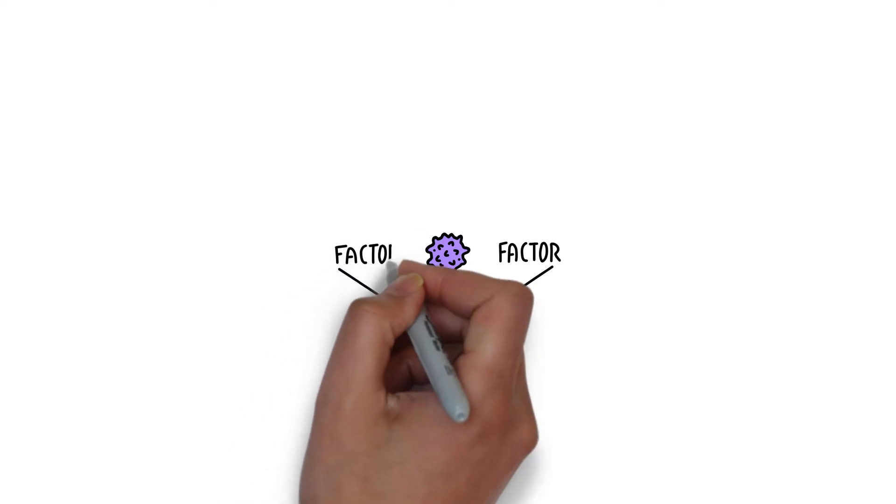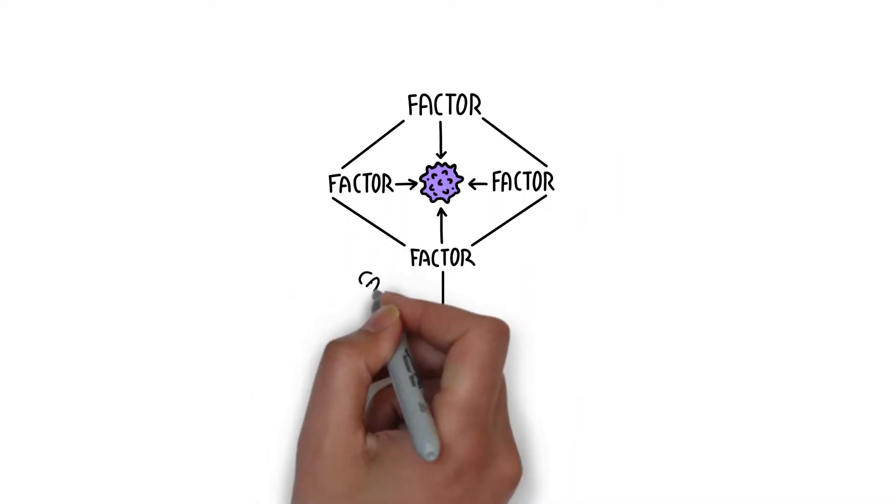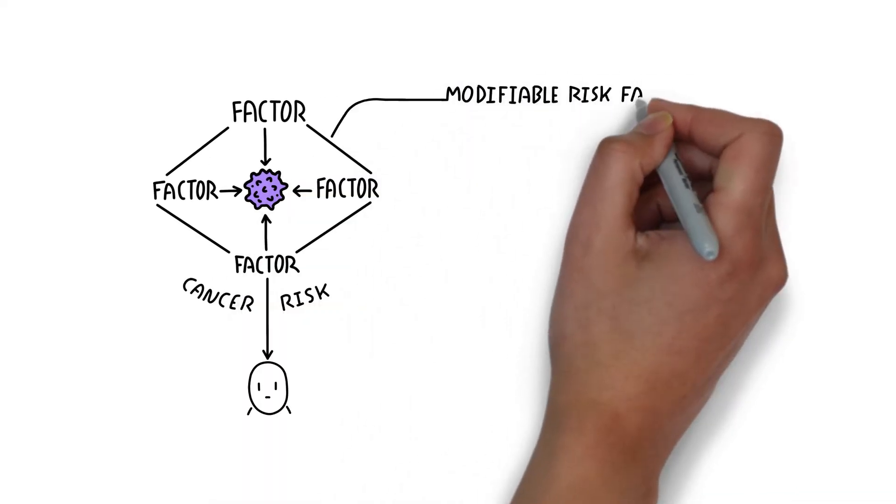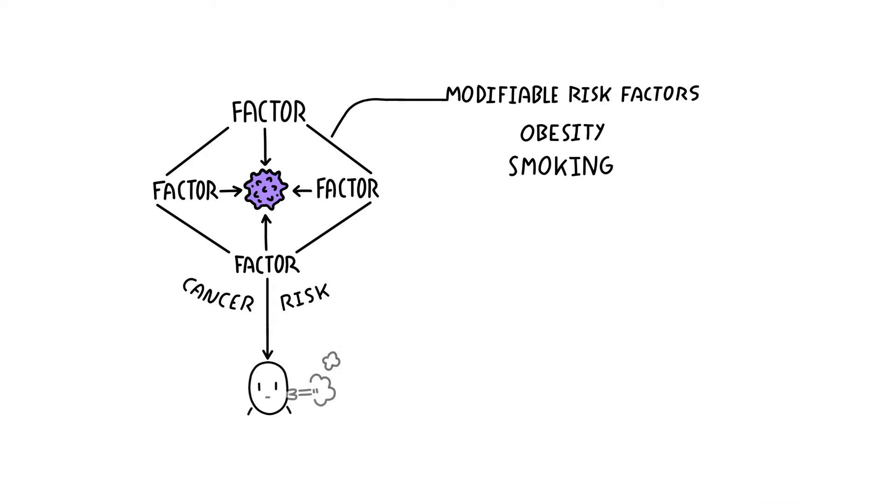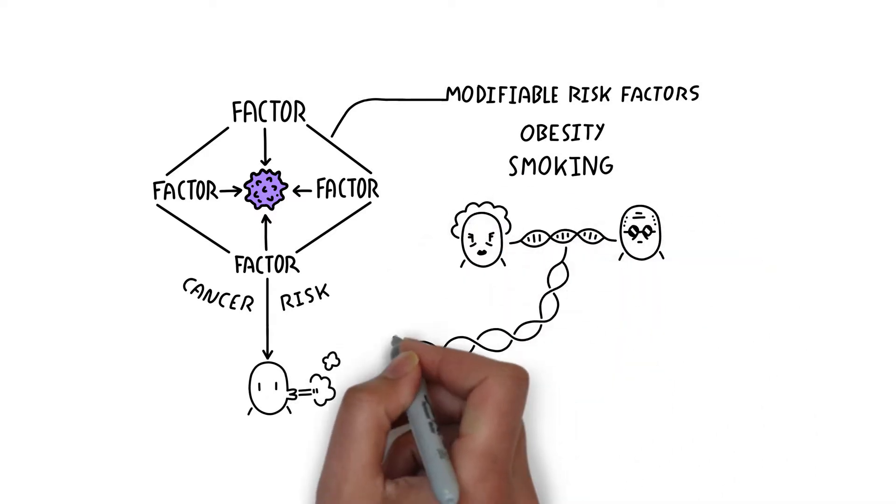Cancer is a complex disease, which means that many factors jointly influence someone's risk. These determinants include both modifiable risk factors that people can change, such as obesity and smoking, as well as genetic factors that are inherited from your parents.